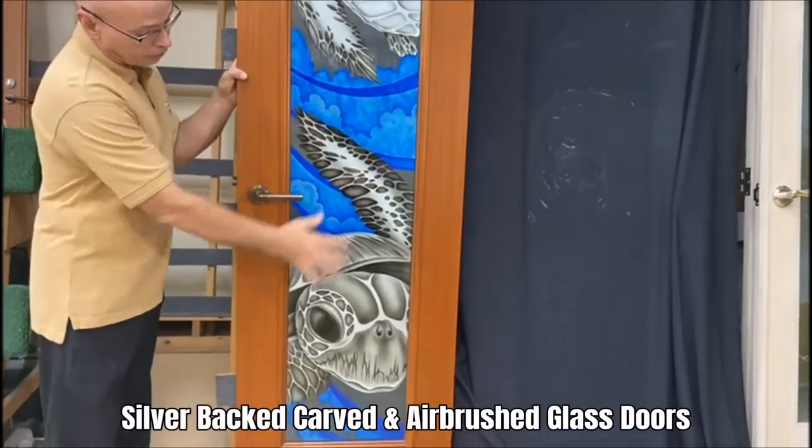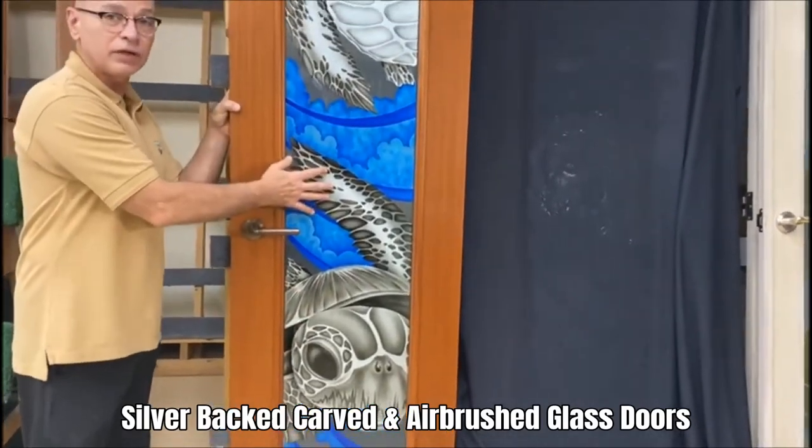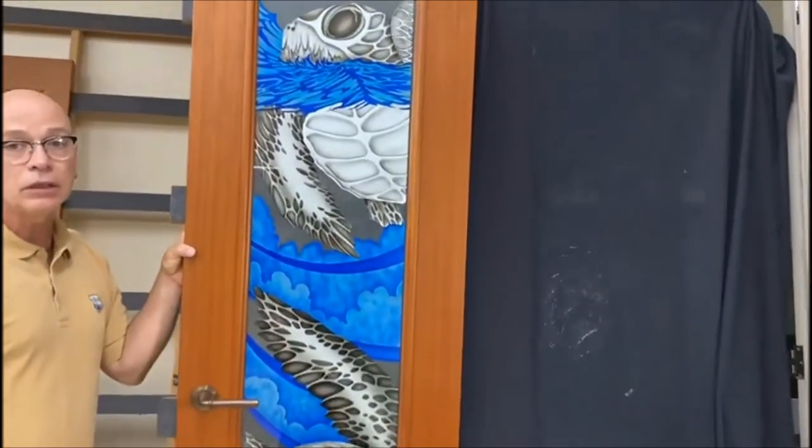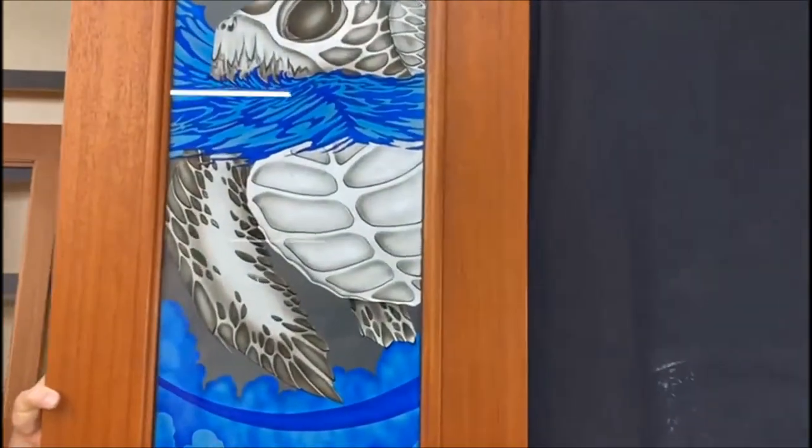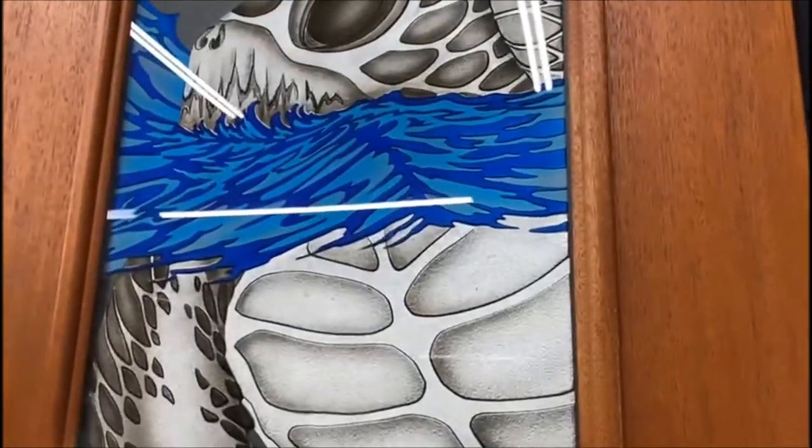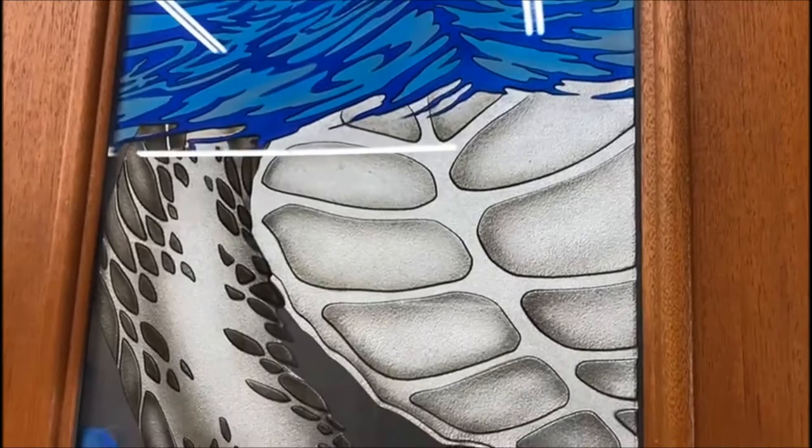All the airbrushing was done then backed with silver to give the privacy that's required and a low light that's required on a yacht. So this is what the finished side would look like.